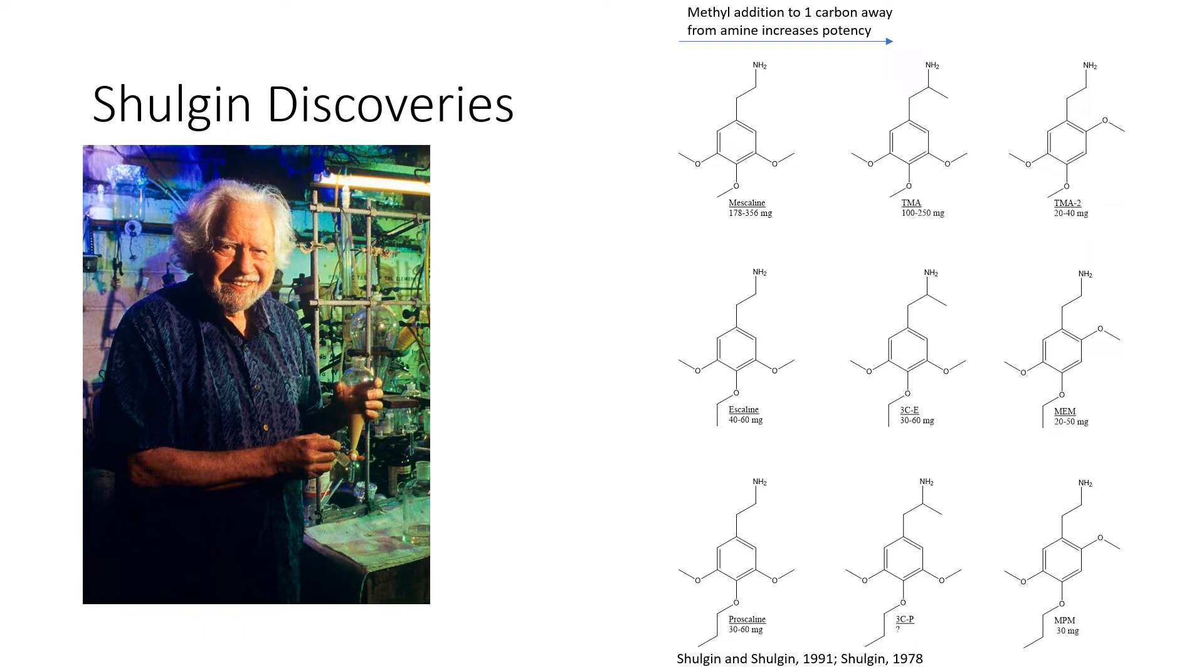If we then look at TMA versus TMA2, the compound to the right of TMA, this has an active dose in humans of 20 to 40 mg. The structural reason for this is that the methoxy in the third position has been moved to the second position. Thus, moving the third methoxy to the second position increases the potency of the drug.